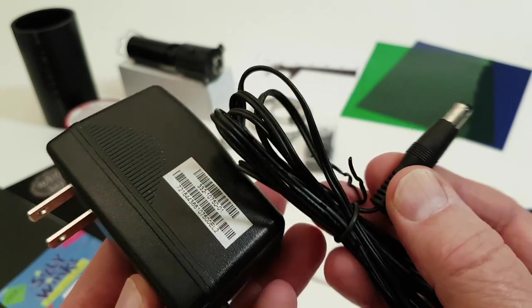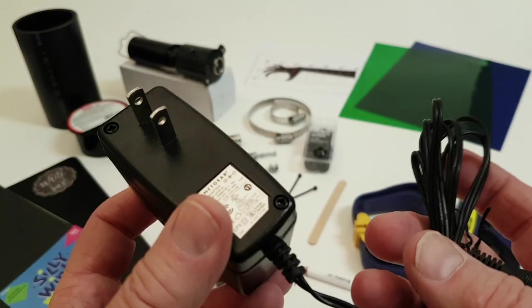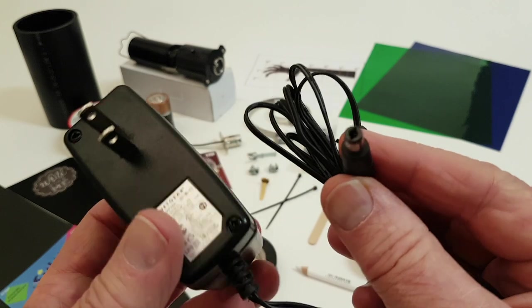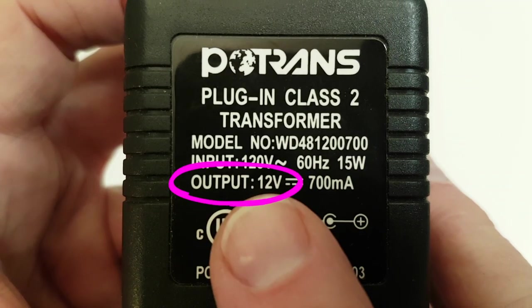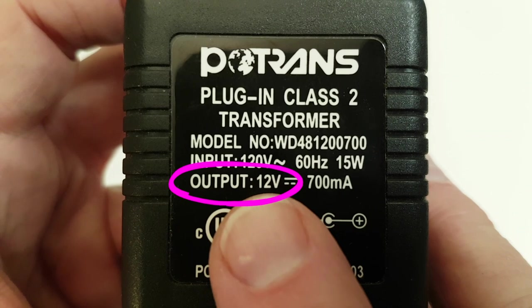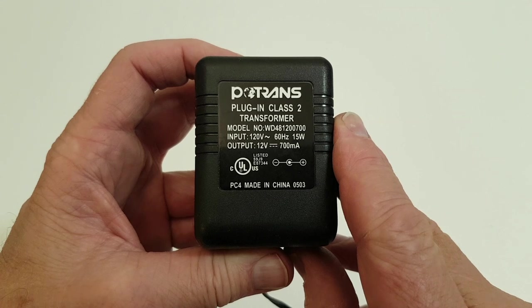To power the low voltage bulb, you will need a small transformer. I find these in abundance at thrift stores and they are very inexpensive. Look for one with an output in the 12 volts range to match the bulb's voltage. A different voltage output, either too high or too low, will adversely affect the bulb's function and life.